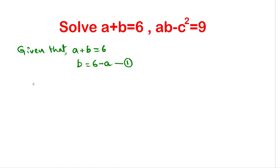Take the second equation, ab minus c squared equal to 9. Now a times b, instead of b, from equation number 1, we have 6 minus a. So substitute b equal to 6 minus a. So instead of b, let us write 6 minus a, then minus c squared equal to 9.